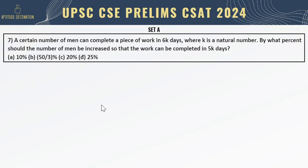Welcome to Aptitude Destination. Please pause the video and read the question completely. A certain number of men can complete a piece of work in 6k days, where k is a natural number. What percent should the number of men be increased so that the work can be completed in 5k days?